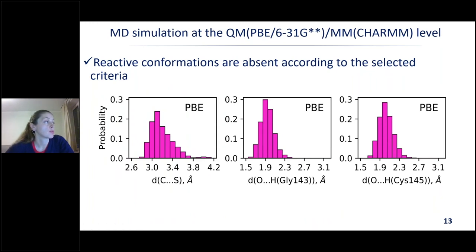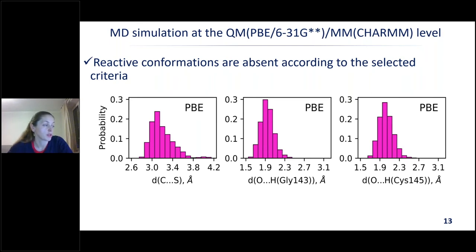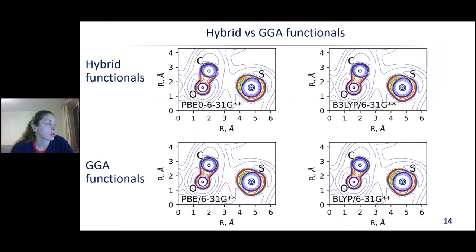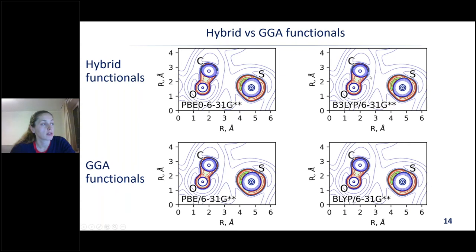Here are the results of MD simulations performed at the QM/MM level with the GGA PBE functional. The distance distributions themselves are really close to those seen with the PBE0 functional. However, analysis of Laplacians of electron densities at different frames resulted in the absence of reactive species — which was actually surprising for us. We then tried to understand the origin by taking a representative reactive frame from the PBE0-level trajectory and recalculating the electron density with B3-LYP and two GGA-type functionals.